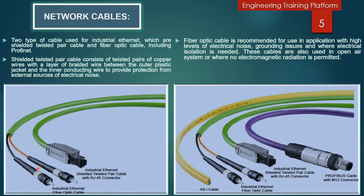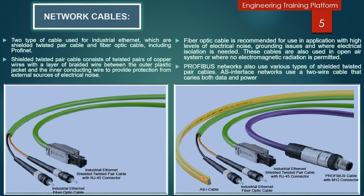Fiber optic cables are also used in open-air systems or where no electromagnetic radiation is permitted. You can see in the picture the M12 connectors, mostly used for PROFIBUS cable, and the RJ45 connectors. These are the optical fiber cables, and these are the ASi cables — very special purpose cables with low cost. They have two wires: one wire is used for data and the other for power. PROFIBUS network also uses various types of shielded twisted pair cables. The ASi network uses a two-wire cable where one carries data and one carries power.